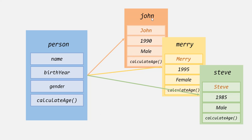If you notice, John, Mary, and Steve also have the same properties and same methods — that is name, birth year, gender, and the calculate age method — and we have also specified the values for those properties. When we create an object based on a blueprint, that object is called an instance of that blueprint. So here, John, Mary, and Steve objects have been created from this person blueprint, so they are instances of it. And in JavaScript, we can define a blueprint or a template like this person using function constructors.